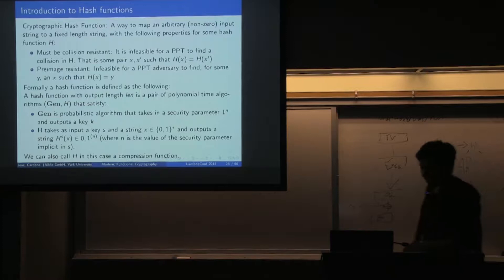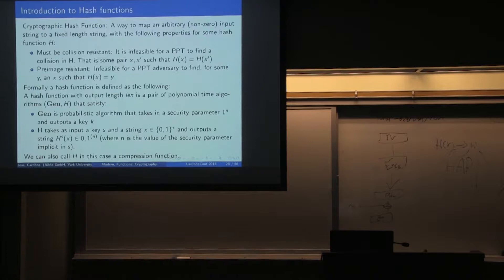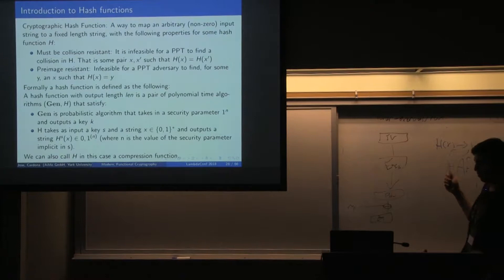We left off at compression functions. Is everyone clear on what a compression function is? It's just another one of those scramblers. The main difference between a compression function and an encryption function is that the compression function is not invertible — that is the main difference. You can go from x to h-prime, but you cannot go from h-prime back to x.